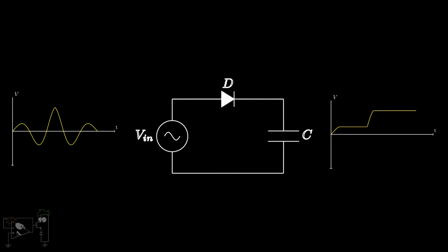Till now we have assumed the diode to be ideal. However, practically the diode conducts only when the voltage across it crosses the threshold voltage. Hence, the output will look like this, where the peak would be slightly less than the actual one.